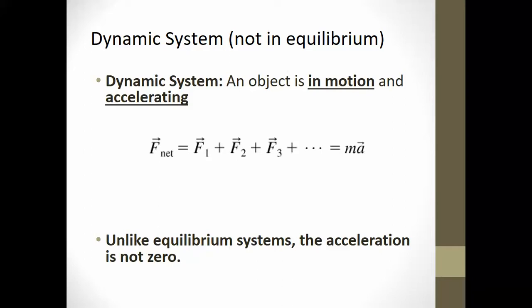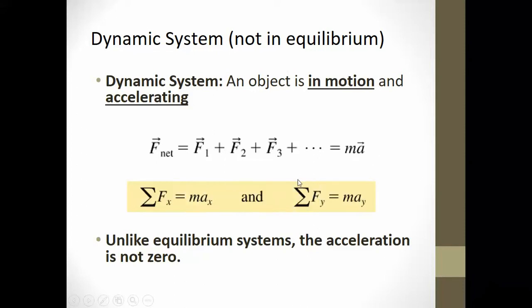The object will be in motion and accelerating. For a dynamic system, the net force, or the sum of all the forces, equals the mass times the acceleration. This is just like equilibrium systems, except that the net force is not equal to zero.